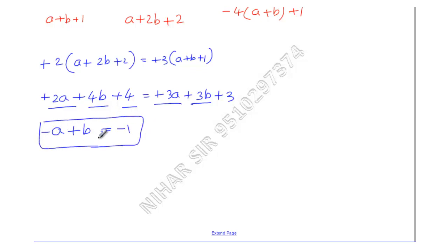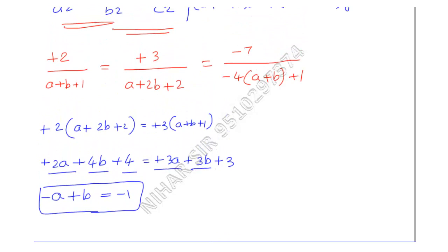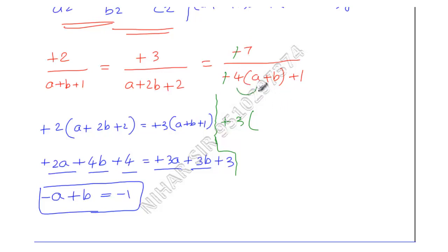Now taking B1/B2 = C1/C2. After cancelling the negatives from both numerators and simplifying, we get: 4(A+B+1) × 3 = 7 × (A+2B+2), which gives 12A + 12B + 3 = 7A + 14B + 14.